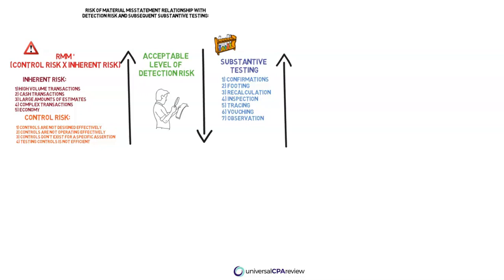This visual does a great job of helping you understand the correlation between risk of material misstatement, the level of detection risk, and the amount of substantive testing that the audit team needs to perform. What we need to know is that risk of material misstatement is driven by inherent risk and control risk.